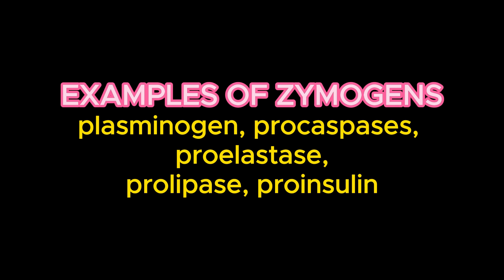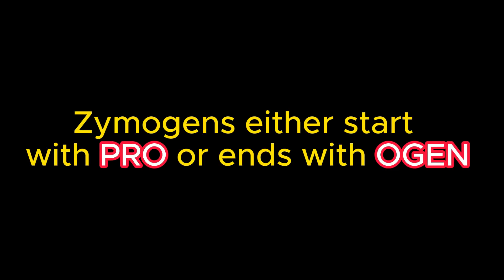Pro-insulin, when activated, becomes insulin. If you notice, zymogens — the pro-enzymes, the inactive enzymes — always have their spelling ending with 'ogen' or starting with 'pro.' Any enzyme ending with 'ogen' (O-G-E-N) or starting with 'pro' is an inactive enzyme. So zymogens always end with 'ogen' or always start with 'pro.'